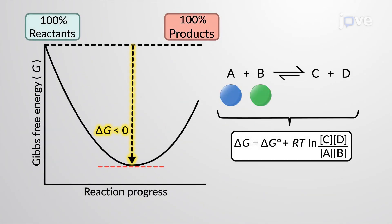If the delta G of a reaction is negative, then the reaction progresses forward. The delta G becomes less.